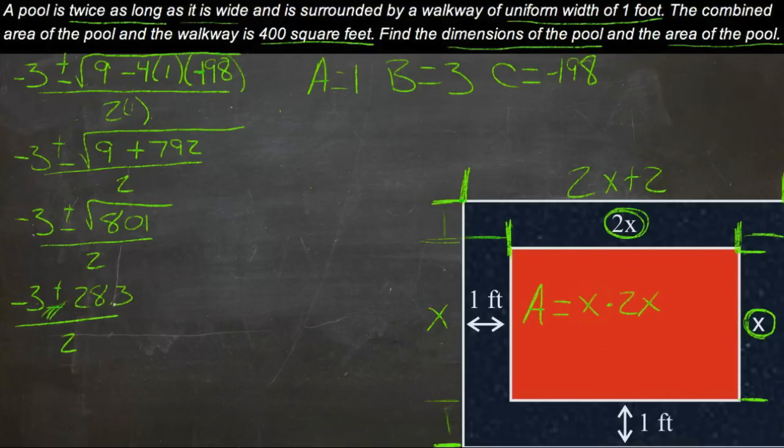And we get negative 3 plus 28.3, which gives us 25.3 divided by 2 equals x. 25.3 divided by 2 is 12.65. So 12.65 equals x.